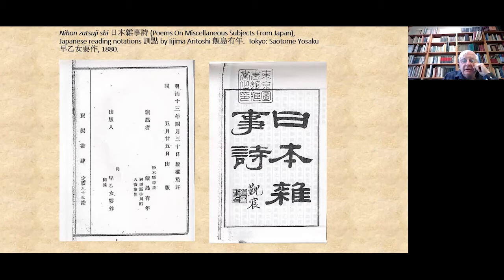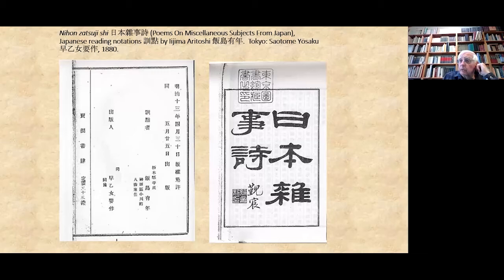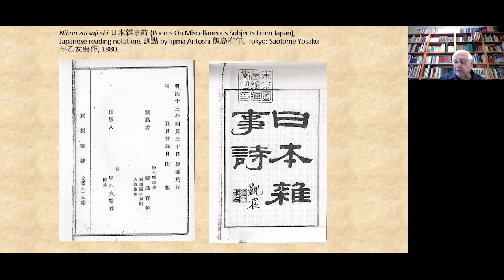In the very next year there were other editions published in Japan — this one has punctuation and Japanese reading notations showing how to read it in Japanese word order, which I've never learned to do. It seems a very difficult and roundabout way of doing it. And a word for those who don't know: this Japanese-Chinese literary culture in the later 19th century in Japan was ubiquitous. Every educated person not only could read literary Chinese, they could compose in it, including poetry — much like Oxford and Cambridge undergraduates once being able to compose in ancient Greek and Latin.